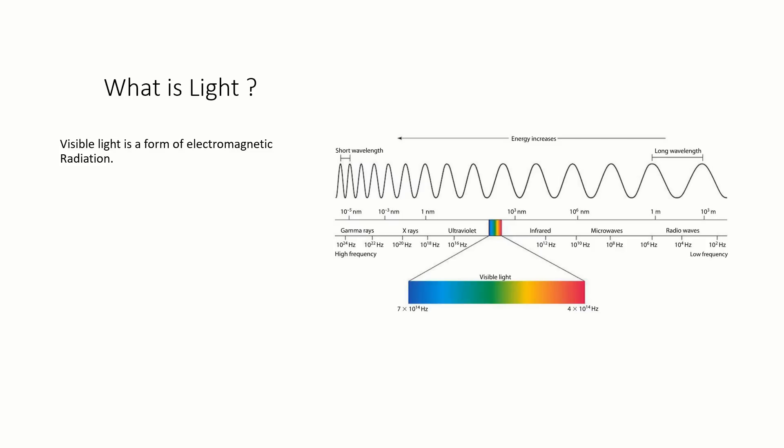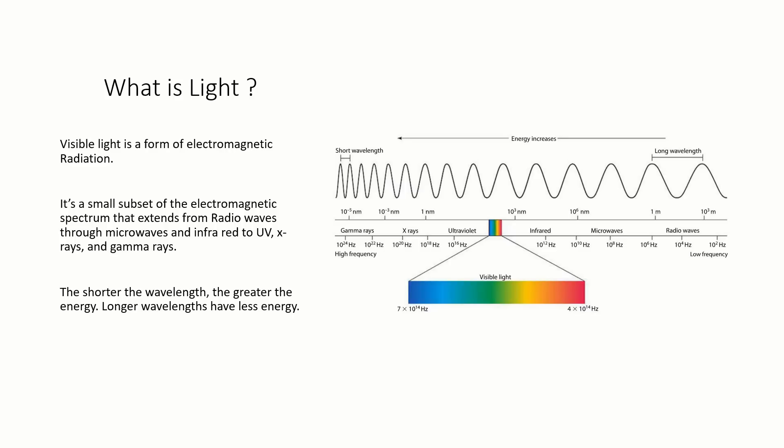So what is light? Technically, it's a very small subset of a very broad spectrum of electromagnetic radiation, which extends all the way from radio waves, through visible and UV, and continuing on to gamma rays, which are at the extremely high-energy end.